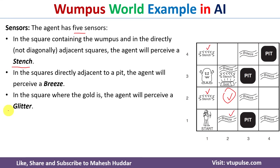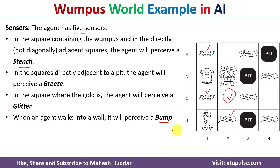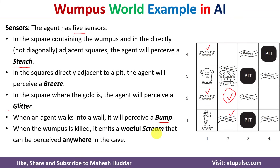The third sensor is the glitter — whenever the agent is present in a room where gold is present, he will perceive the glitter, meaning he can execute the grab action to grab the gold. The fourth sensor is the bump — whenever the agent walks into a wall, he will perceive a bump. The fifth and last sensor is the scream — whenever the Wumpus is killed, it emits an awful scream that can be perceived anywhere in the cave.